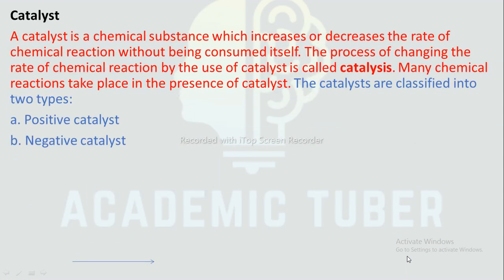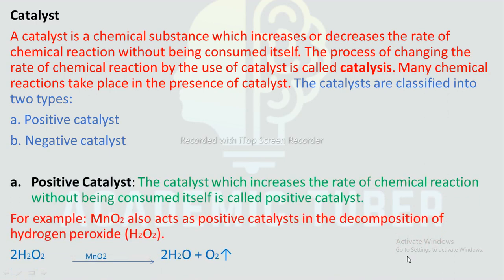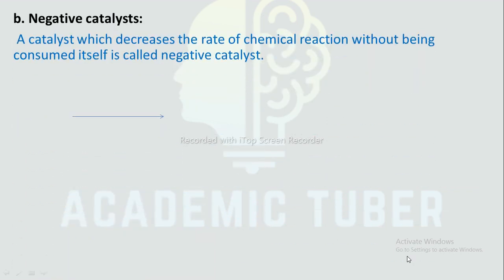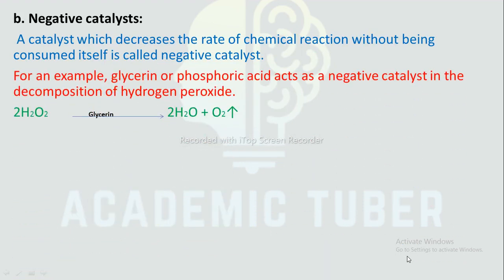Catalyst: A catalyst is a chemical substance which increases or decreases the rate of chemical reaction without being consumed itself. The process of changing the rate of chemical reaction by the use of a catalyst is called catalysis. Many chemical reactions take place in the presence of a catalyst. Positive catalyst: A catalyst which increases the rate of chemical reaction is called a positive catalyst. For example, manganese dioxide (MnO₂) acts as a positive catalyst in the decomposition of hydrogen peroxide: 2H₂O₂ in the presence of MnO₂ → 2H₂O + O₂. Negative catalyst: A catalyst which decreases the rate of chemical reaction is called a negative catalyst. For example, glycerin or phosphoric acid acts as a negative catalyst in the decomposition of hydrogen peroxide: 2H₂O₂ in the presence of glycerin → 2H₂O + O₂.